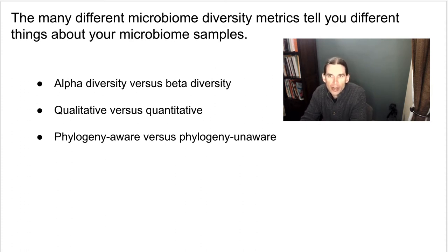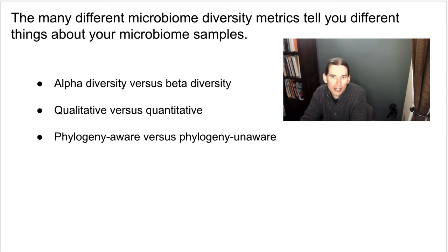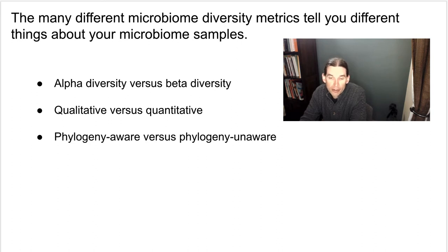There are many different microbiome diversity metrics and they tell you different things about your microbiome samples. The first category we differentiated was alpha diversity versus beta diversity. Remember that alpha diversity is within-sample diversity — a metric that you typically compute on one sample at a time from your feature table.